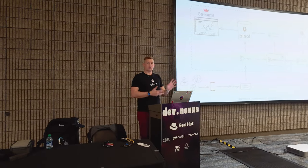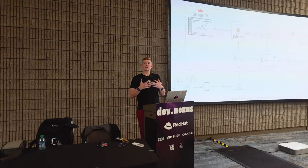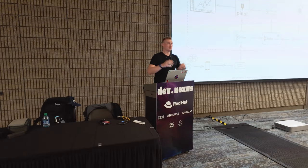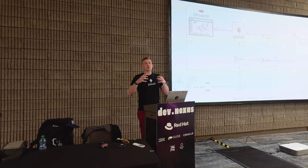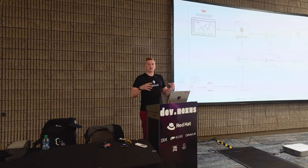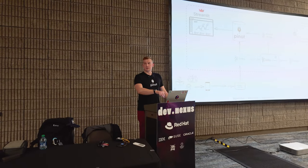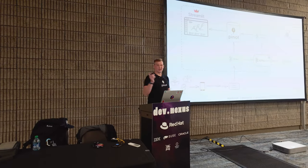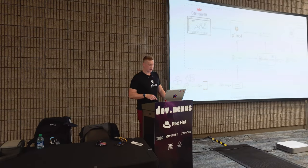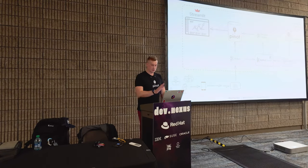One recommendation we make to customers is to do pre-joining using existing frameworks — that's why Kafka Streams or Flink are ideal for joining data. Those components are replaceable. I'll show you at the end how we can do joins inside Pinot without using a third-party tool. The demo URL is s3.ai/pizzademo.